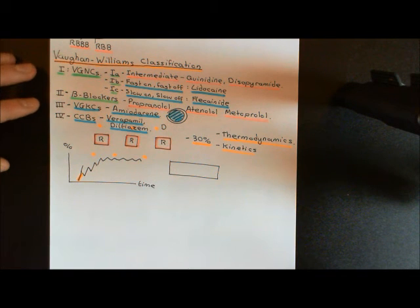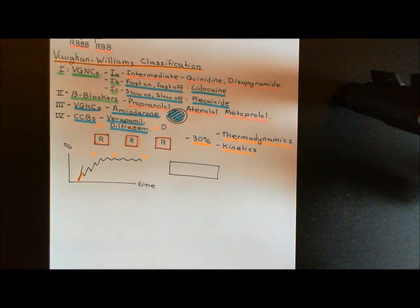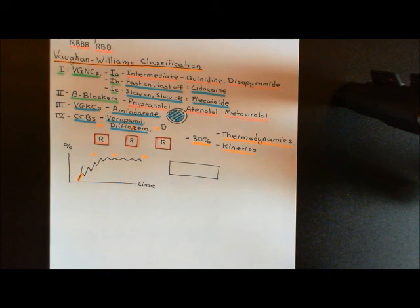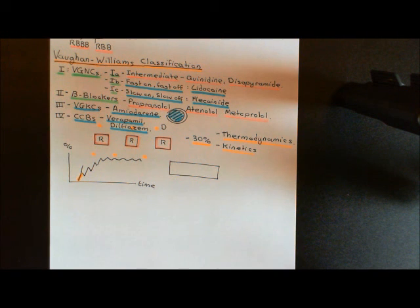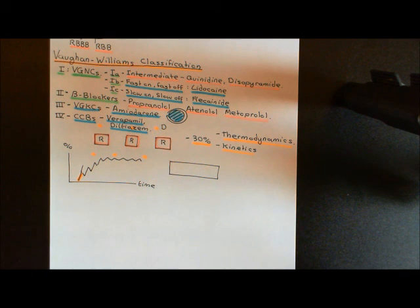Two drugs from this video don't fit any Vaughan Williams category: digoxin, which works by a mysterious mechanism to increase parasympathetic stimulation to the heart and slow AV nodal conduction; and adenosine, given intravenously, which slows AV nodal conduction by acting on A1 receptors. With that, this video on cardiac arrhythmias is complete.